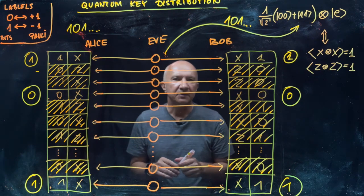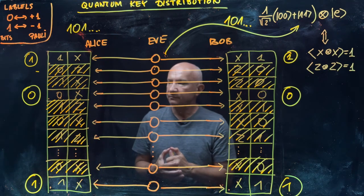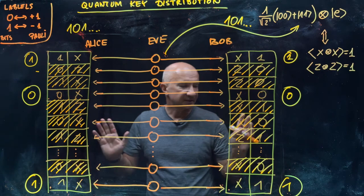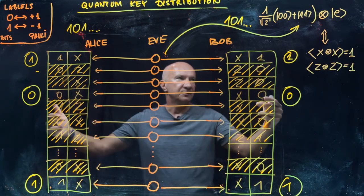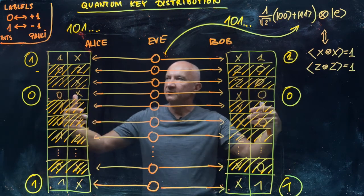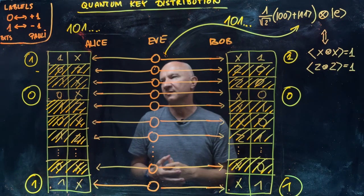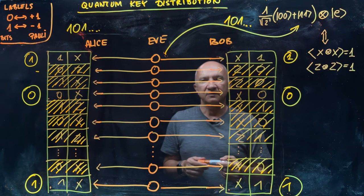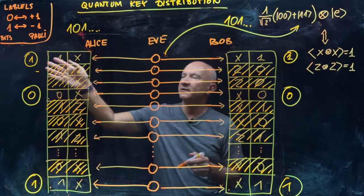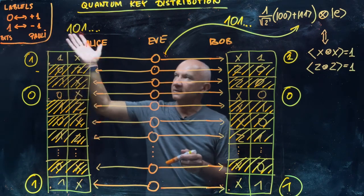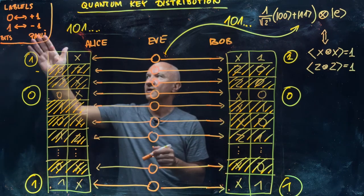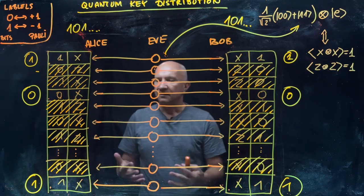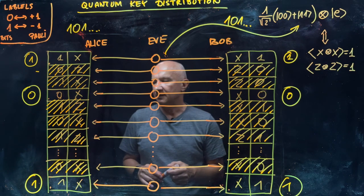We also assume that Alice and Bob have full trust in their devices and access to a public channel. One minor technical note: be careful about labels. In this protocol I use zeros and ones for outcomes, as we often do for binary strings. But when doing calculations with Pauli operators, we use labels plus one and minus one. Remember there is a one-to-one correspondence: zero in the binary language is interpreted as plus one in the Pauli language, and one is relabeled as minus one. But that's essentially quantum key distribution and how it works.